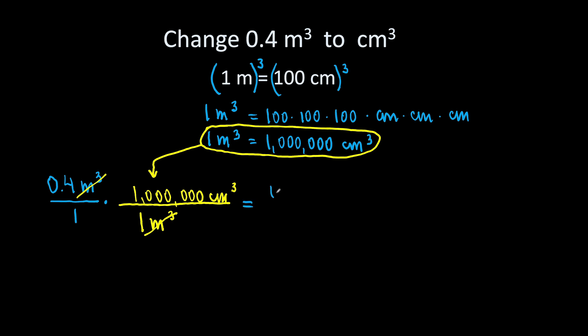We have 0.4 times 1 million cubic centimeters over. And in the denominator, we have 1 times 1. So, 0.4 times 1 million will be 400,000 cubic centimeters. Very good! That is the answer.